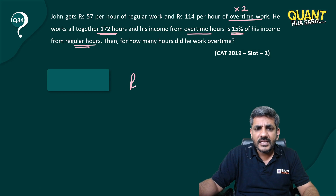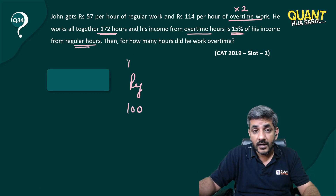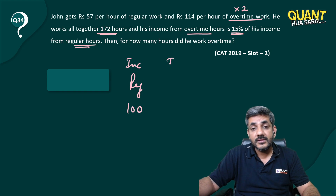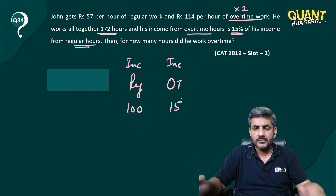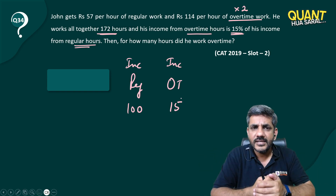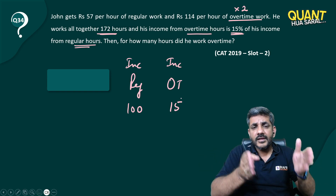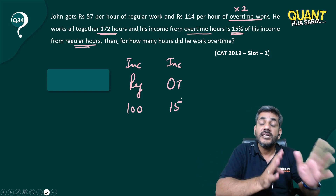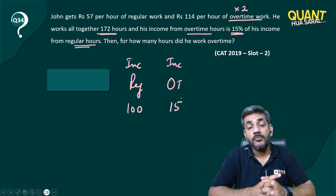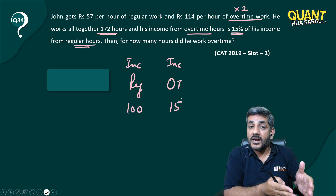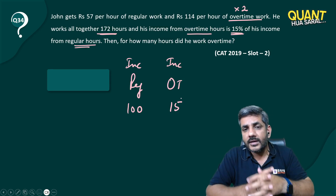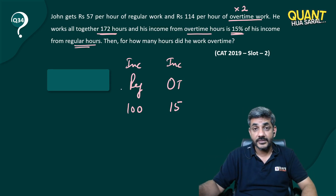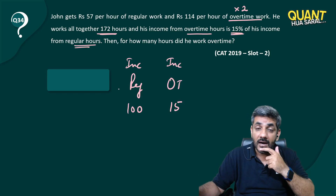If his regular hours income is 100, then the income from overtime hours is 15 — that's what the question says. His income from overtime hours is 15% of his income from regular hours. So if regular hours income is 100 rupees, overtime hours income is 15 rupees.